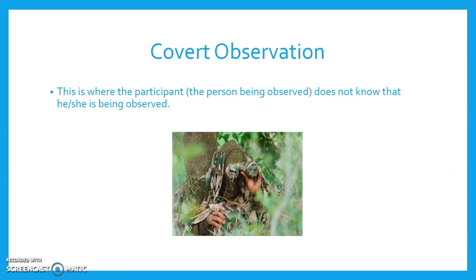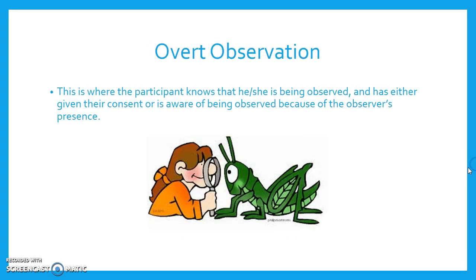Covert observation. This is where the participant, the person being observed, does not know that he or she is being observed. Overt observation. This is where the participant knows that he or she is being observed and has either given their consent or is aware of being observed because of the observer's presence.